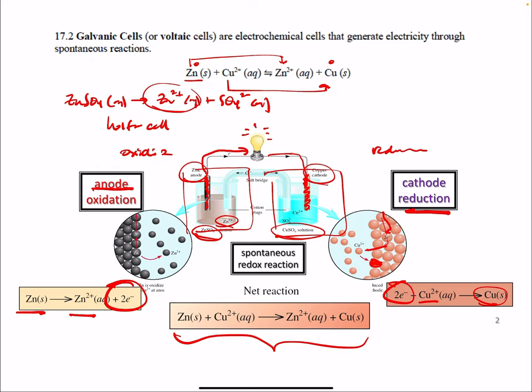So the net reaction is this. A couple things we have to think about. So the other thing, or the last thing to talk about, is the salt bridge. What happens here is, as you start to oxidize zinc, you're generating a positive charge in solution. And so you can't continue to do that, you have to neutralize that somehow.